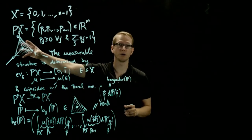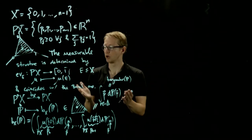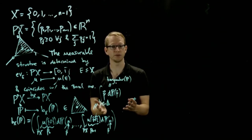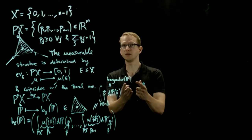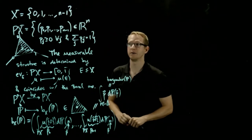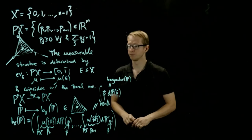So in this case, we have a probability measure on this simplex. We can compute the natural transformation applied to that probability measure, and it turns out that it is equal to the barycenter of that measure as viewed as a measure on this simplex.